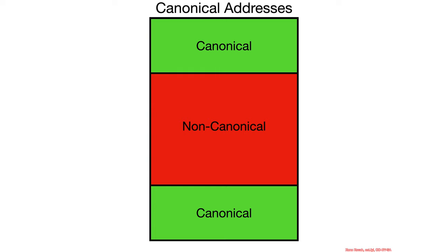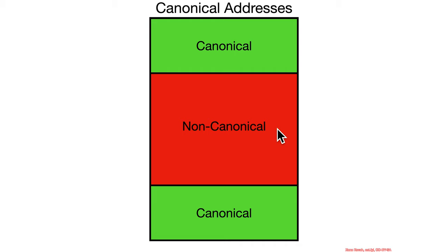In this section we're going to talk about something called canonical addresses. Although we ostensibly have 64-bit systems, in reality we can't use all the bits. The address space, the 64-bit linear address space, is broken up such that the uppermost range is valid and the lowermost range is valid, and the middle bits for some number of bits is going to be invalid.